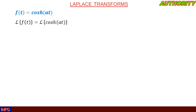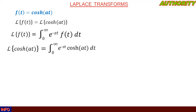Now let's solve this using the direct method, also called the first principle — that is, direct integration. We again use the definition: the Laplace transform of f(t) = ∫₀^∞ e^(−st) f(t) dt. With f(t) = cosh(at), we write the integral from zero to infinity of e^(−st) · cosh(at) dt.